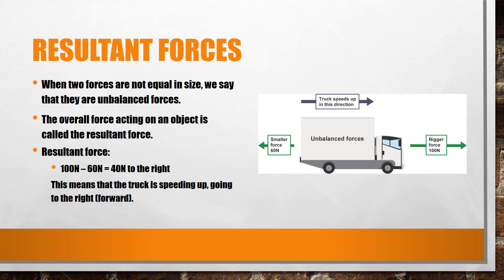An object can only move if there is a force acting on them. However, we know that there is always more than one force acting on an object at any given time. When forces are not equal in size, we can say that they are unbalanced. The overall force that is acting on an object can be found from those unbalanced forces, and we call it the resultant force.